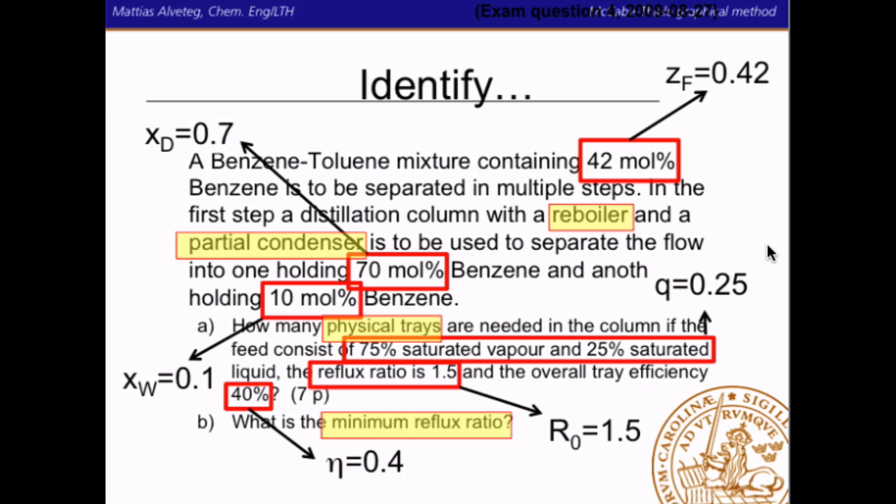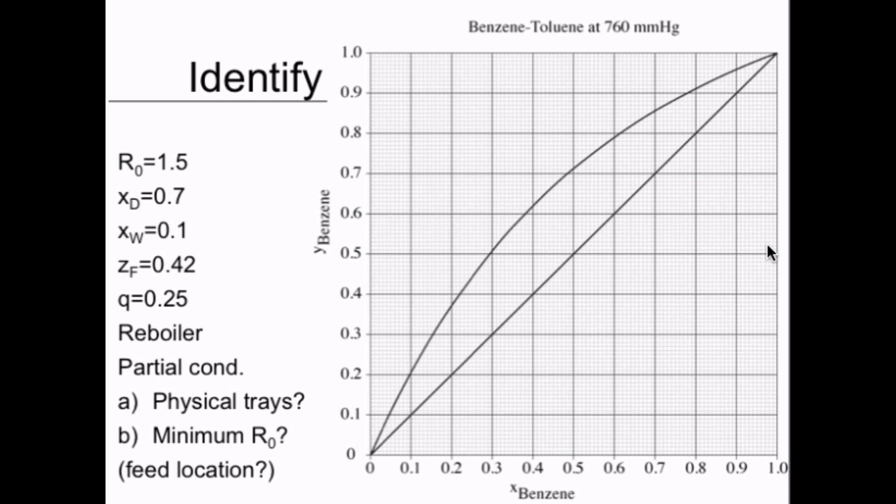To summarize: R equals 1.5, XD equals 0.7, XW equals 0.1, ZF equals 0.42, Q equals 0.25. We have a reboiler and a partial condenser. We need to calculate the number of physical trays and the minimum reflux ratio. We will also need to calculate the feed location and will do that in some detail.